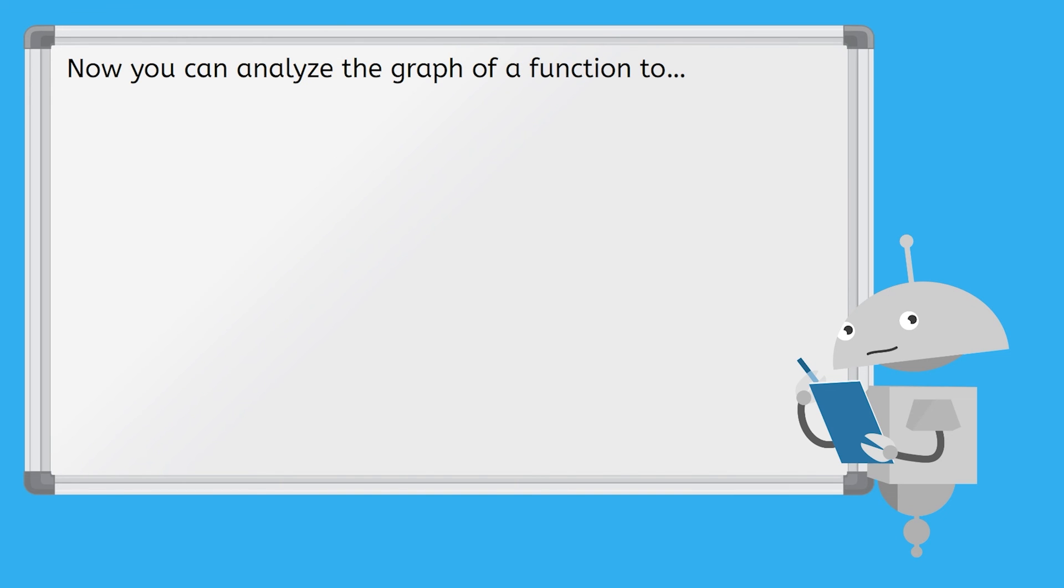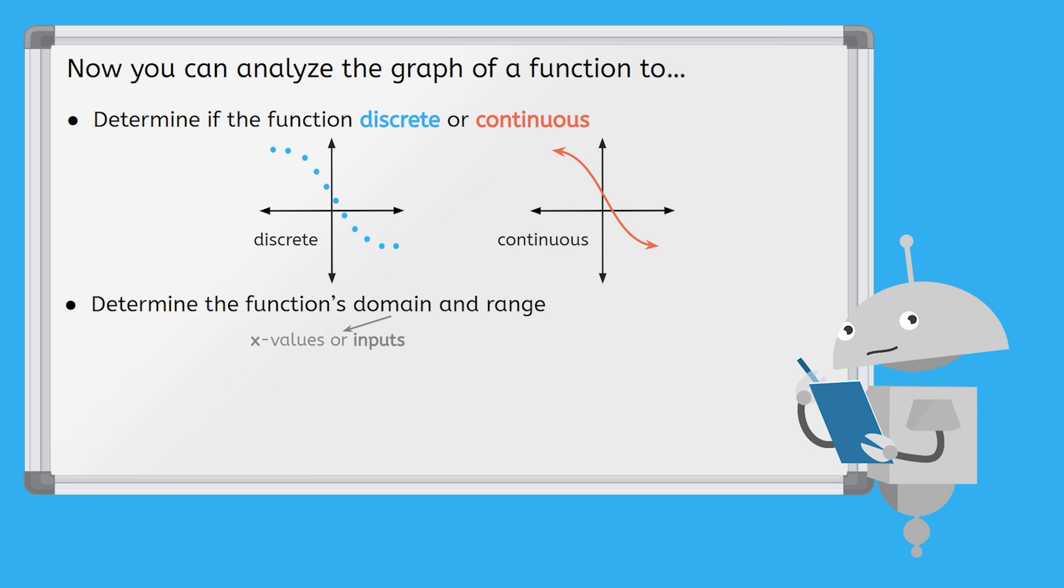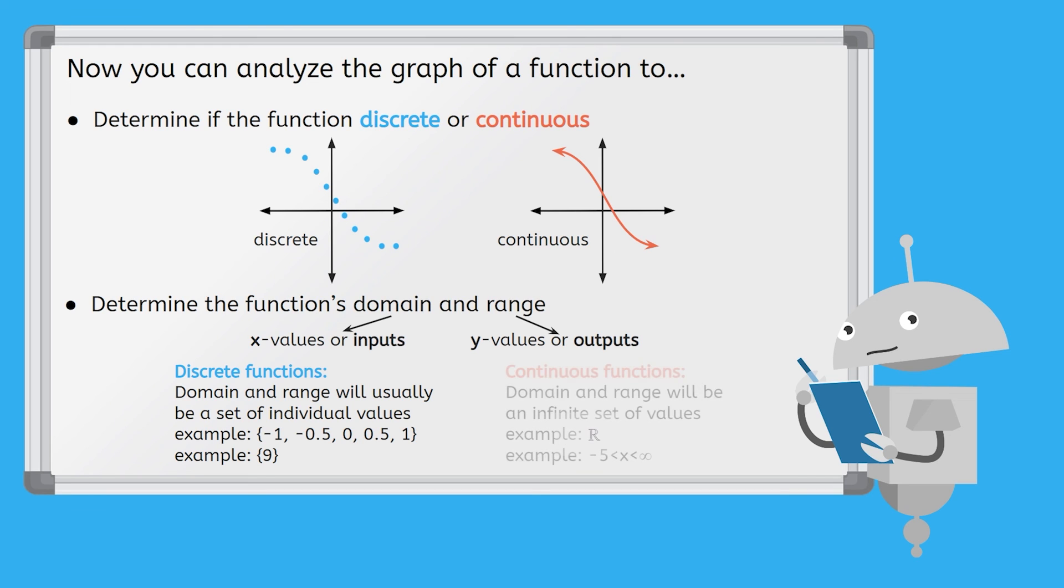Let's summarize what we've learned so far on analyzing the graphs of functions. Firstly, you can determine if a function is discrete or continuous. The graphs of discrete functions consist of unconnected individual points, while the graphs of continuous functions consist of a single, unbroken line or curve. And secondly, you can determine the function's domain and range, where the domain is the set of x values or inputs, and the range is the set of y values or outputs. Now, when it comes to discrete functions, the domain and range will usually be a set of individual values written as a set with curly brackets, whereas the domain and range of continuous functions will be an infinite set of values.